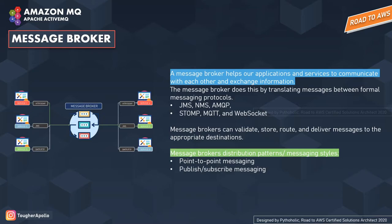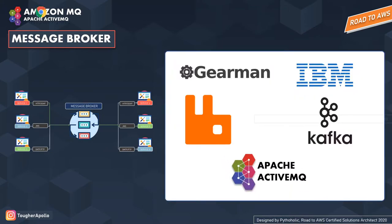When we look at the most prominent message brokers, we have Gearman, IBM MQ, RabbitMQ, and I think the most popular one you've heard is Kafka. The one we will be talking about today is ActiveMQ. Till now, we have discussed what a message broker is, how they work, and how they propagate and help communicate messages. Now we will move on to the service provided by Amazon for ActiveMQ. Even if you have never used a message broker, this is going to be very simple for you.